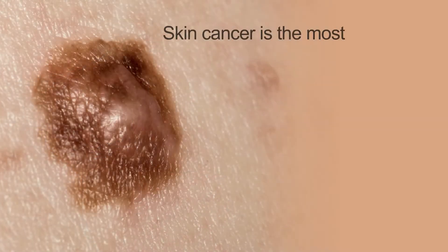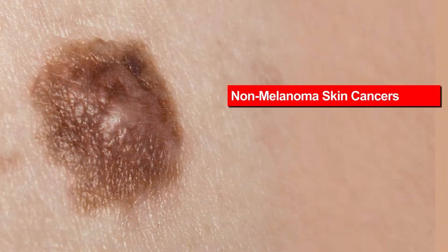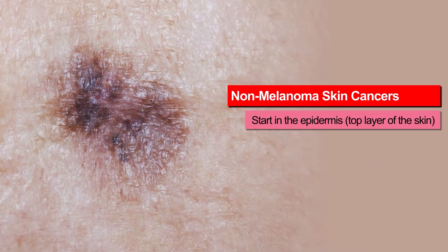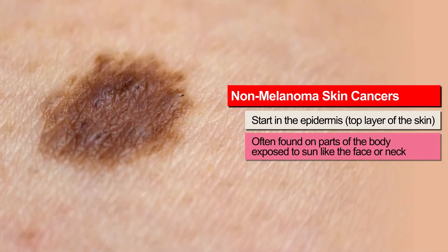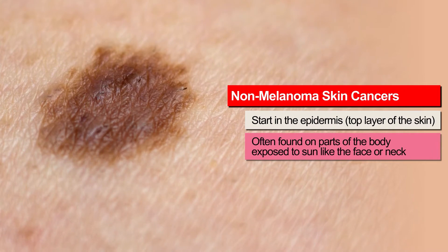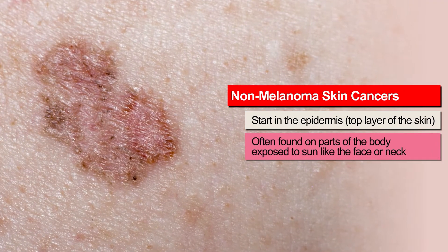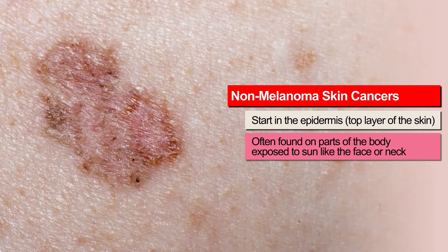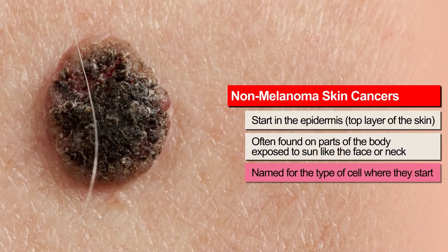Skin cancer is the most common type of cancer. Non-melanoma skin cancers begin in the top layer of skin, called the epidermis. They often start on parts of the body that are exposed to the sun, like the face or neck. Abnormal cells form lesions or tumors. They may look like tiny marks. Skin cancers are named for the type of cell where they start.